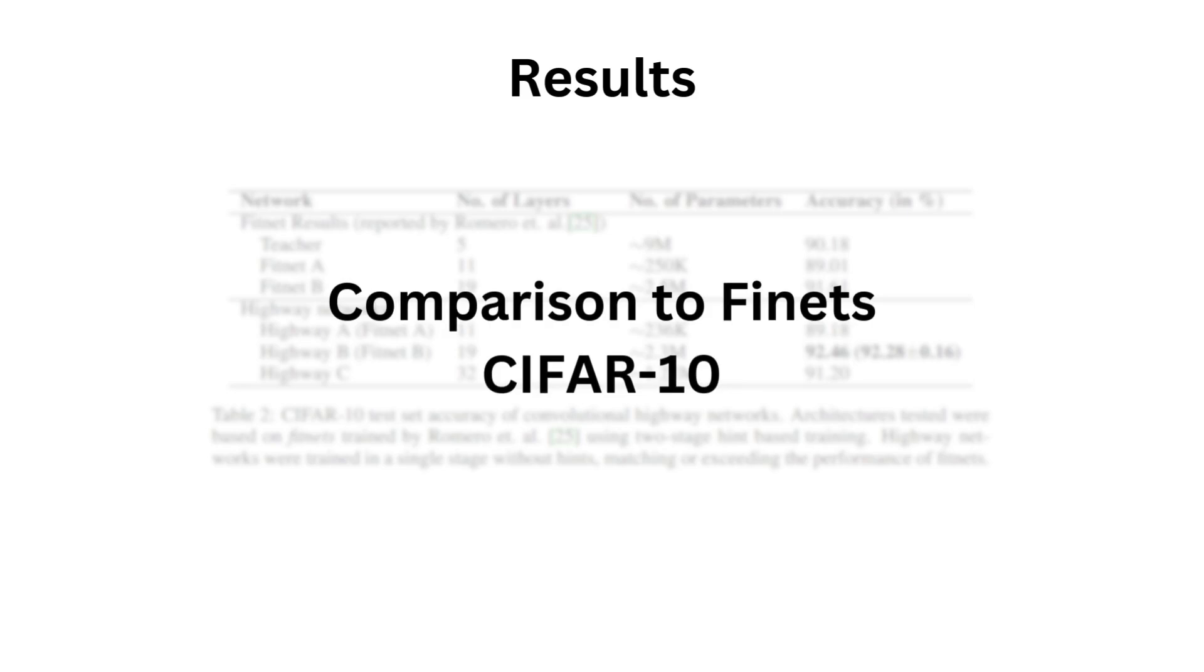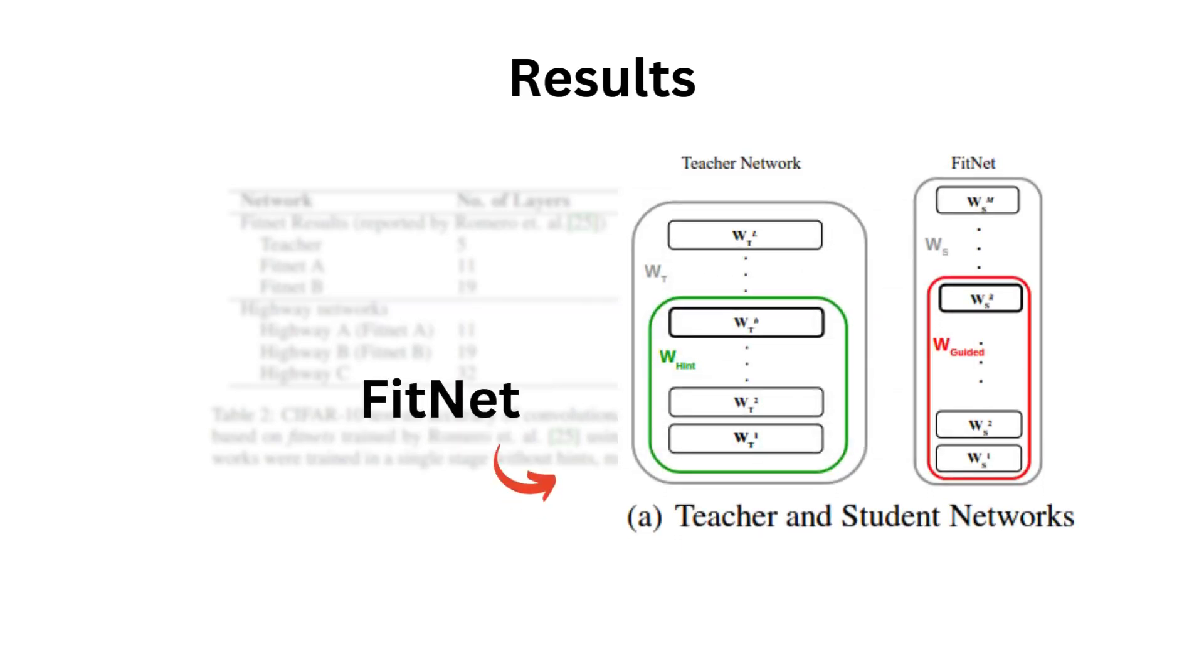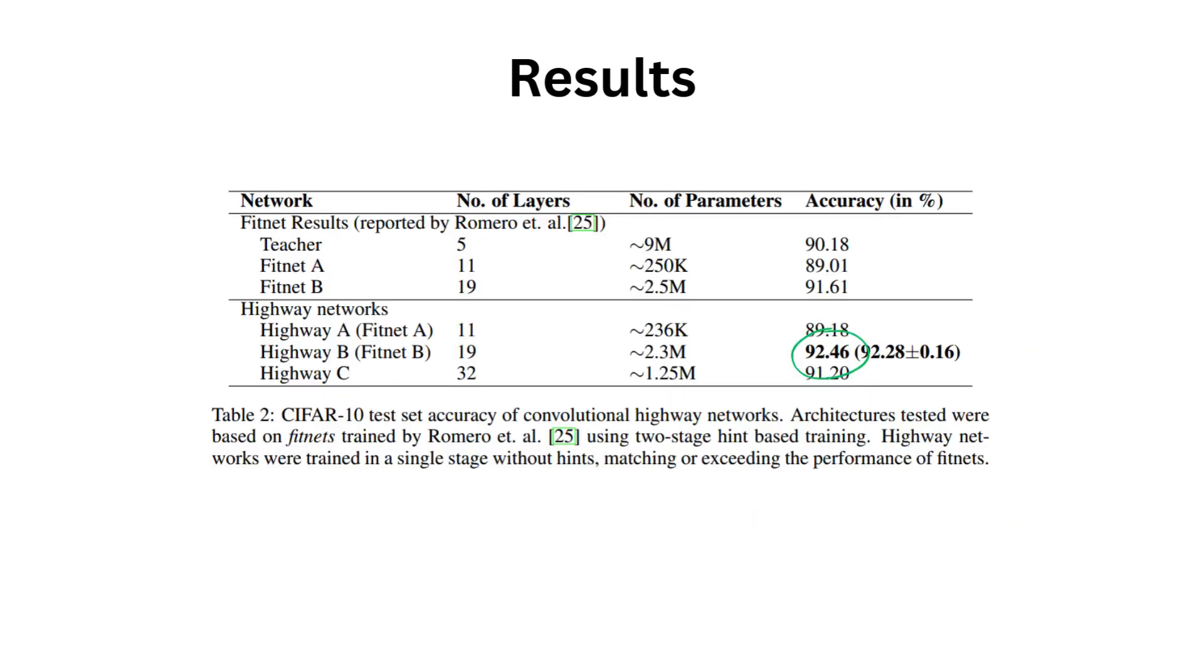The authors continued to compare the network against others. One of the deepest architectures at the time was the FitNet architecture, which used the teacher-student training scheme. They modulated their highway network from 11 layer to 32 and checked their performance on the CIFAR 10 benchmark. As we can see, the highway B, which matched the FitNet B at 19 layers, was much better than the FitNet of similar size.